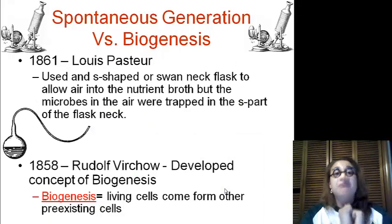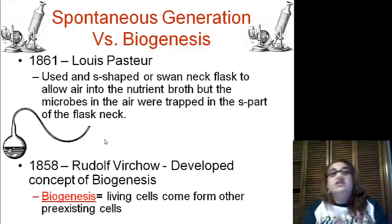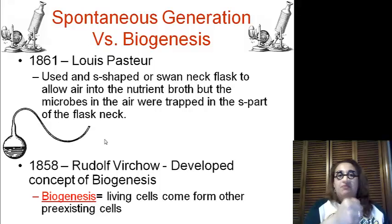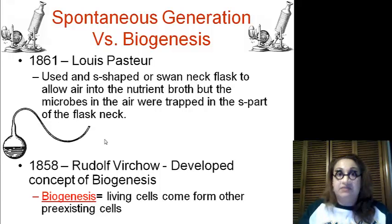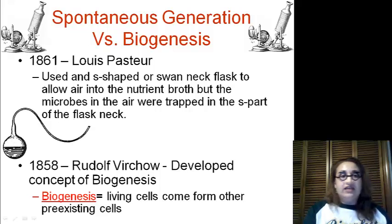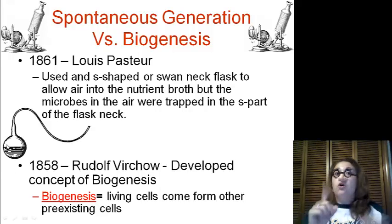In 1861, Louis Pasteur used a swan neck, or S-shaped flask, which allowed air into the nutrient broth. Originally, he took nutrient broth, left it open to the air, and got bacteria inside. Then he boiled it and sealed it — and there were no microorganisms, because it had been boiled and then sealed. But then people said everything needs oxygen. So he created this swan neck flask, which allowed oxygen to come in, but it trapped the microbes in the S-shaped or U-shaped neck. Therefore, when he tested the broth later on, there were no microorganisms.